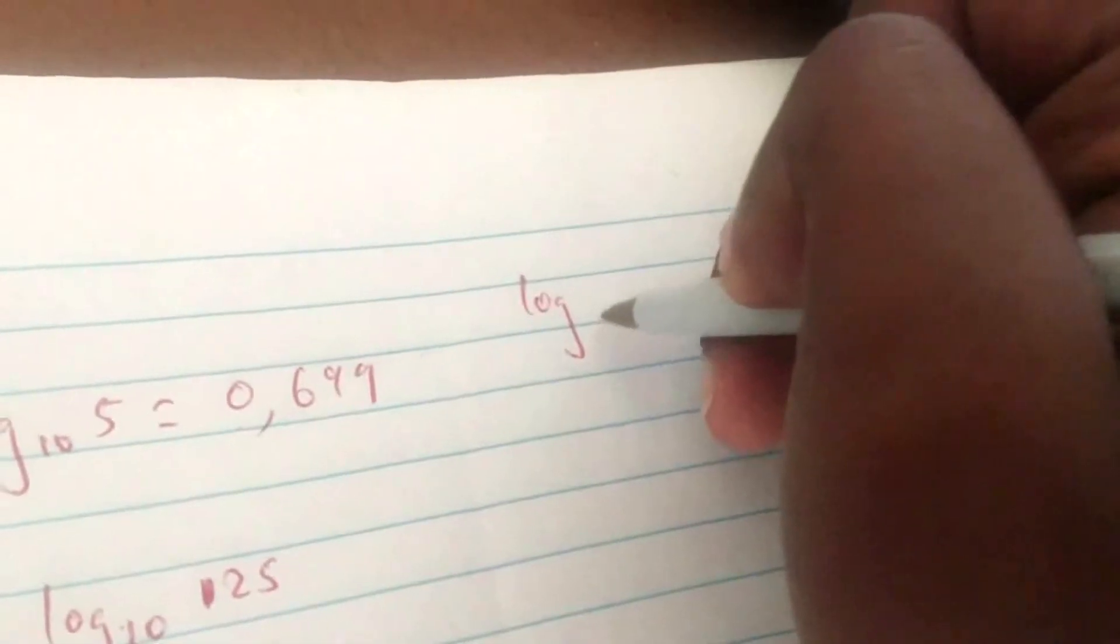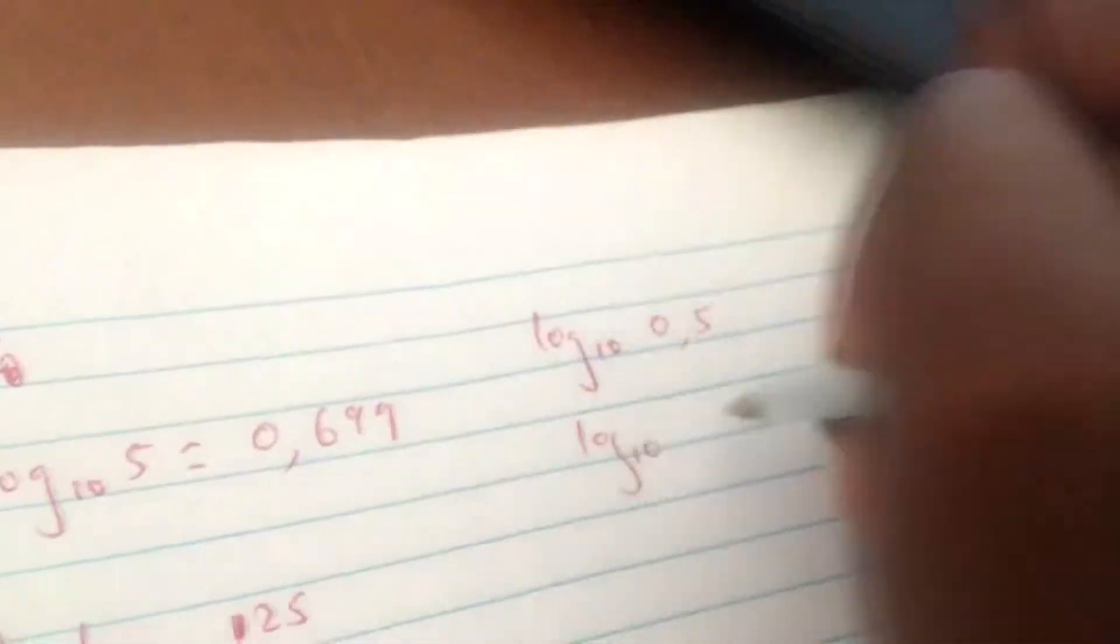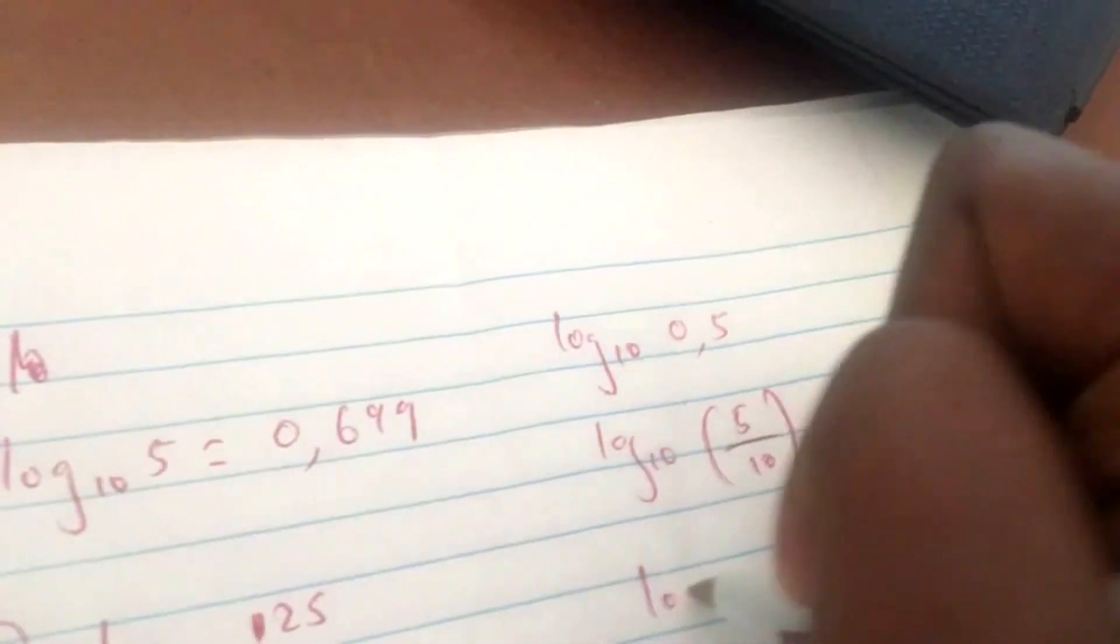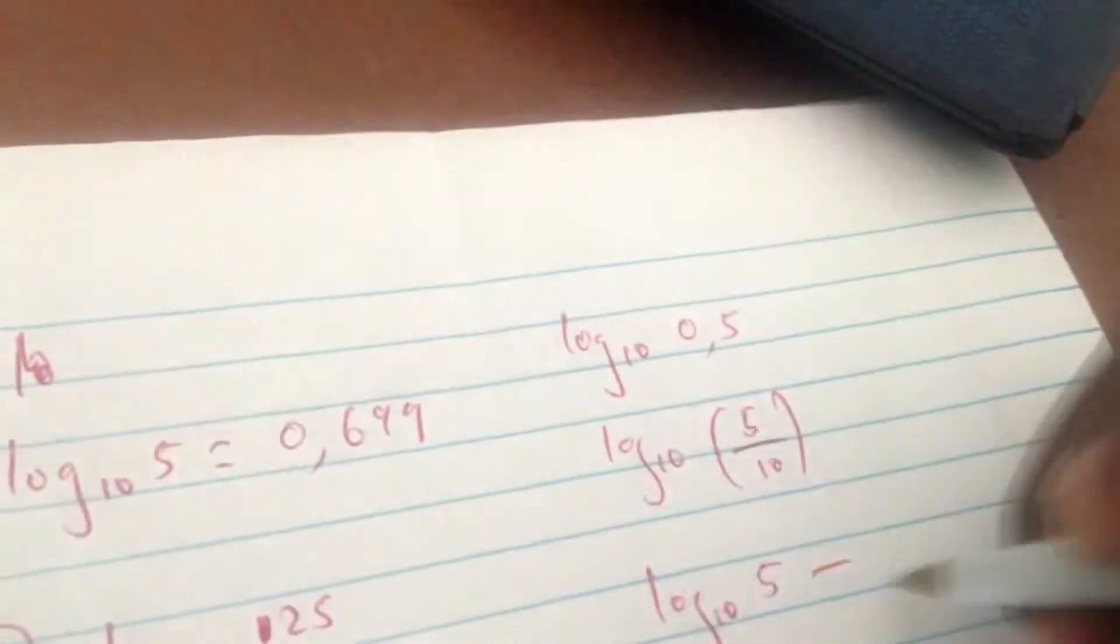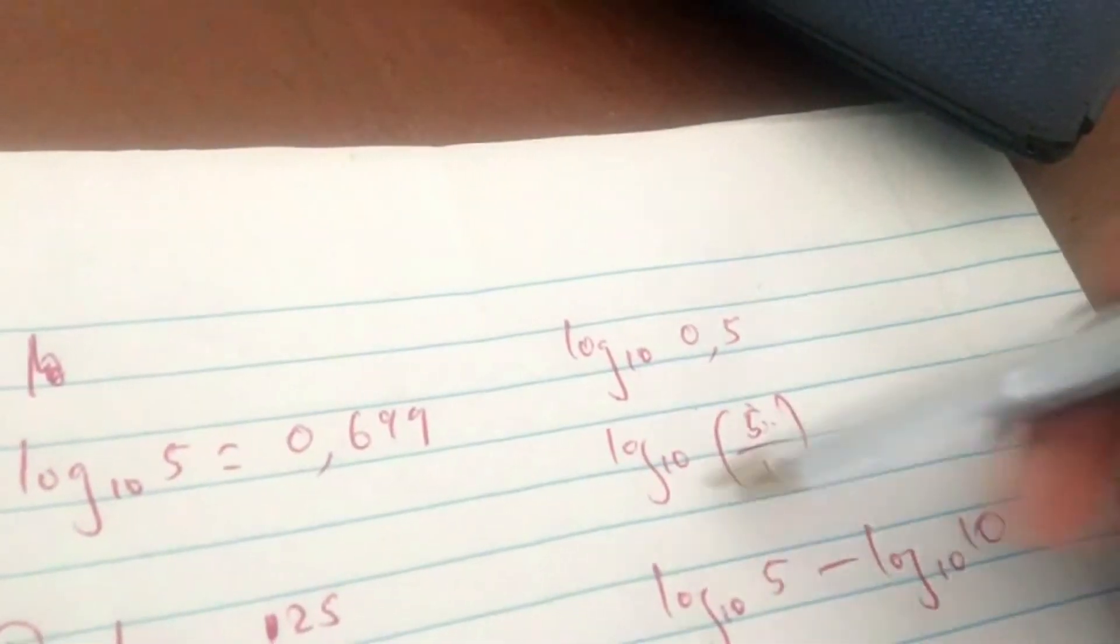Moving on, you have the logarithm to base 10 of 0.5. Now 0.5 is log base 10 of 5 over 10, which is log base 10 of 5 minus log base 10 of 10. When you divide two numbers with a common logarithm, you split them by subtracting.